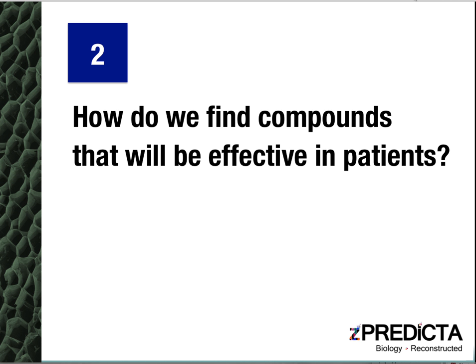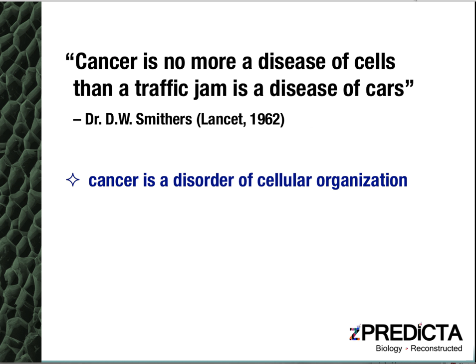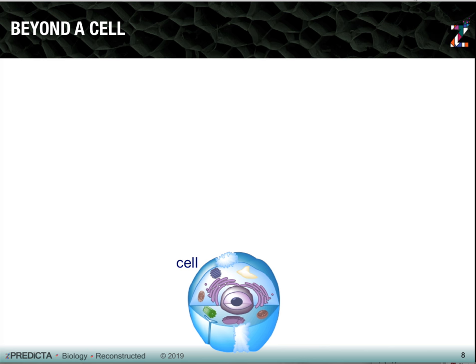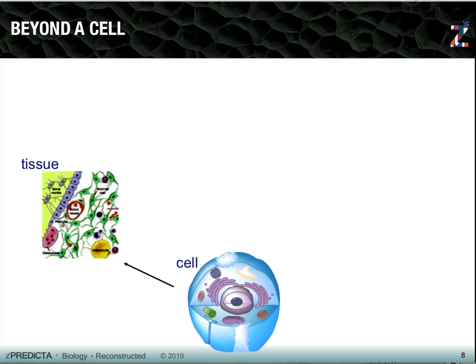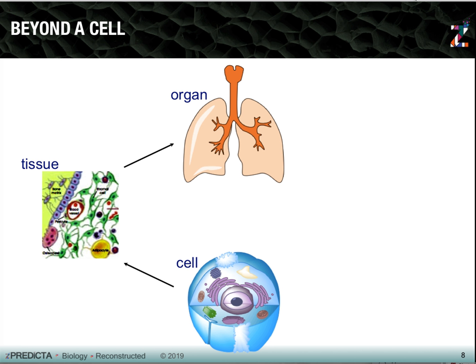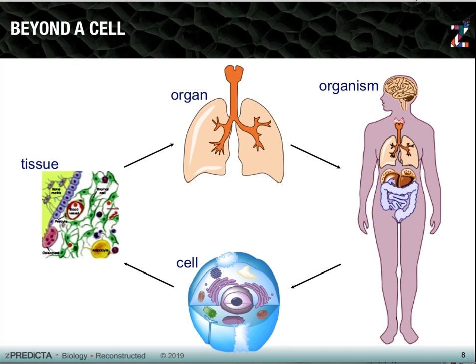So how do we find these compounds? What models do we need to use to really identify such agents? The idea behind 3D culture systems came from as early as the 1960s, when Dr. Smithers suggested that cancer is really not a disease of a single cell, but a disease of cellular organization and cellular interactions. We really have to look beyond the single cell to the tissues comprised of various cells with a very specific architecture, to the organ itself, and of course the organism. All of these different systems contribute to cancer development and progression.